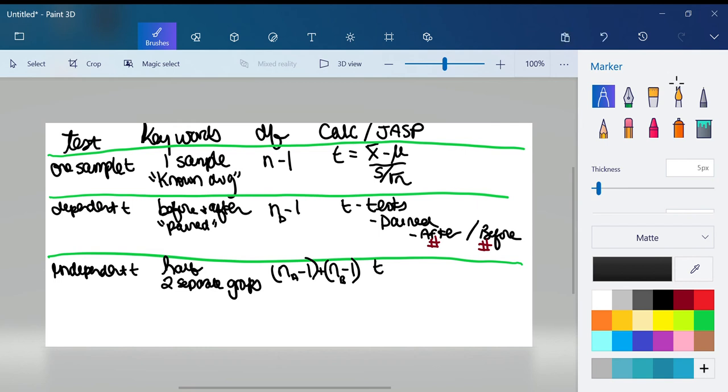Okay so for JASP we want to click t-tests and this one it does call it an independent T, and then what you want to make sure you do is the dependent variable is going to be your number and then your fixed factor is going to be your ordinal and so it looks like a Venn diagram.